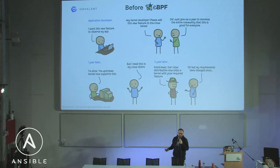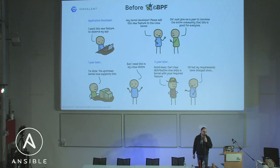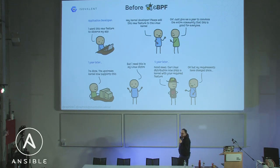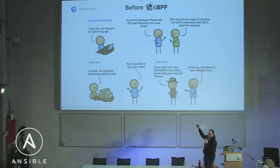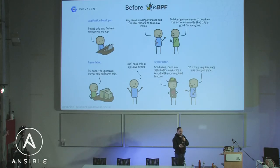A few years ago, some people got together to think: how do we make kernel development more agile? How do we keep adding features for SDN, security, and so on, without a huge, very long and complex life cycle? Before eBPF, if you want a new feature to observe your app or add new networking capabilities, you can make a patch to the Linux kernel and send it. But it takes a very long time to get accepted, and even once accepted, it will take a very long time until it ends up in a distribution. Probably three to five years until your patch is in a Linux distribution.